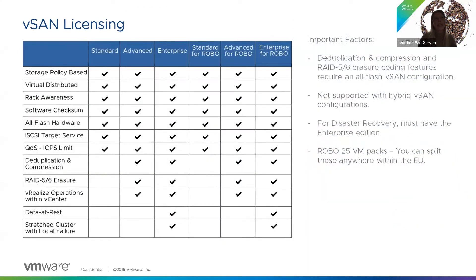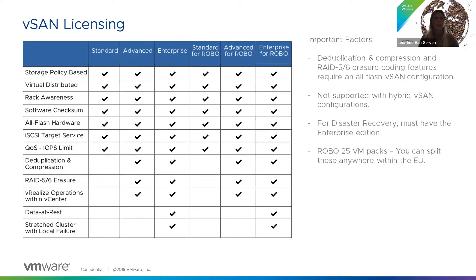vSAN has three different licensing editions. The standard edition has the most basic functionalities. The advanced edition becomes interesting when the customer needs deduplication and compression functionalities. And the enterprise edition provides more functionalities in terms of disaster recovery and encryption.